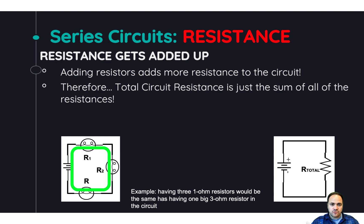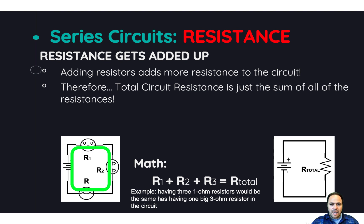Resistance in a series circuit is really straightforward — you just add up all the resistors. For example, if you had three one-ohm resistors in a series circuit, you add them all up and get a total of three ohms. That's equivalent to having one big three-ohm resistor in the circuit by itself. To calculate the total resistance for a series circuit, just add up all the resistors.